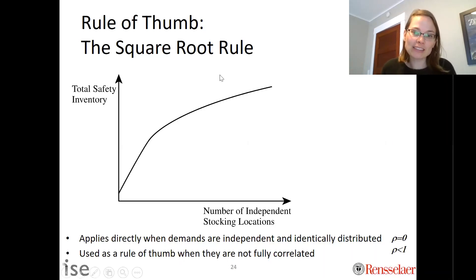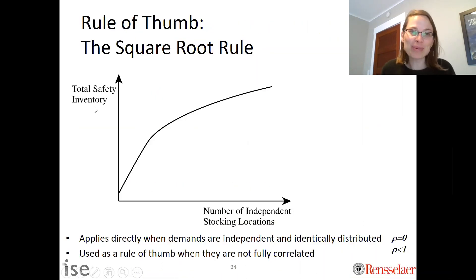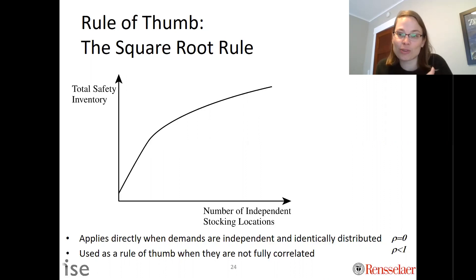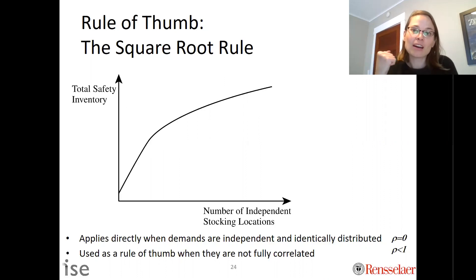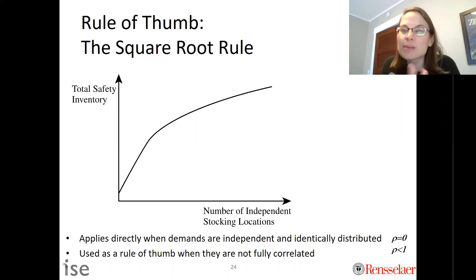If you think about the x-axis as the number of independent stocking locations, the safety stock goes up at the square root of the number of independent stocking locations. That applies directly when demands are independent among regions and identically distributed — IID — meaning rho, the correlation between regions, is zero. However, in reality that doesn't always work. It's used as a rule of thumb when demands are not fully correlated and each region has a similar enough distribution.